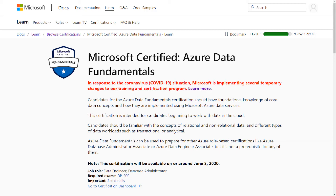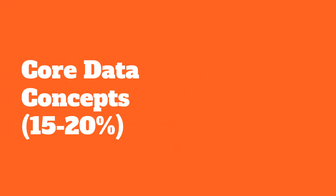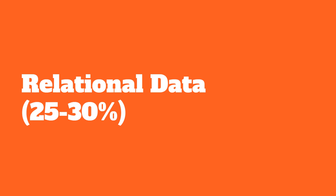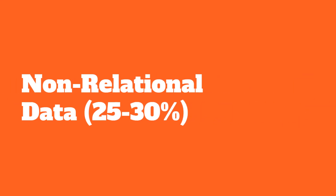We can break down the core areas of the exam as follows. One topic is core data concepts — the absolute basics when working with data, whether in the cloud or on-premises — covering 15 to 20% of the exam. Moving into relational databases: traditional SQL server tables, columns, keys, etc., covering 25 to 30% of the exam. The third section is non-relational data, covering Cosmos DB and Azure Table Storage, also 25 to 30% of the exam.